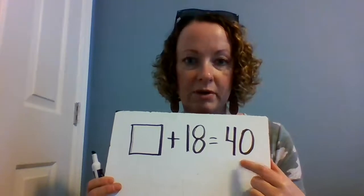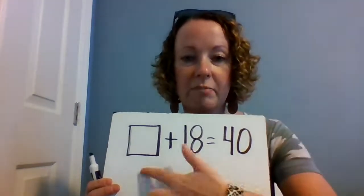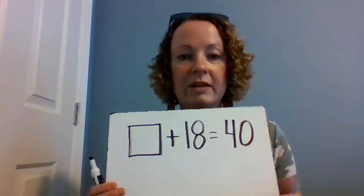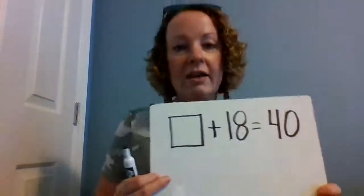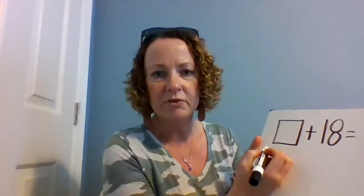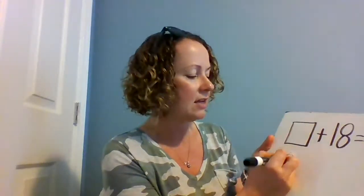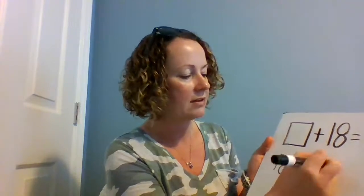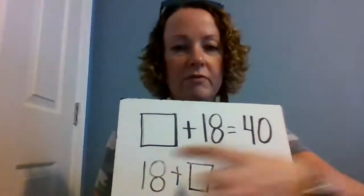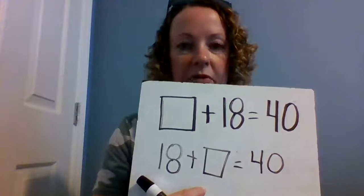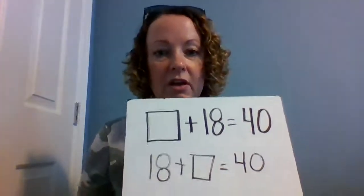Okay, so today we have box plus 18 equals 40. Now there are a couple of ways that you can do this. First of all, I usually teach kids to flip this around so that I know what the first number is. Remember, order doesn't matter when you're adding, so you can take 18 plus box equals 40. That's one way that you can do it. You can flip-flop that problem and put the known number first and the box in the middle.